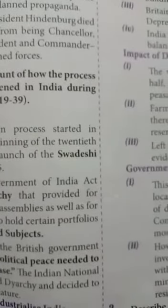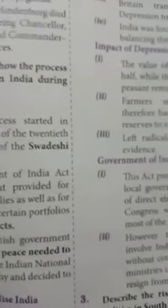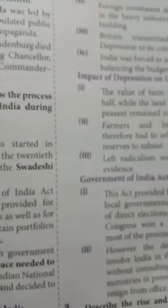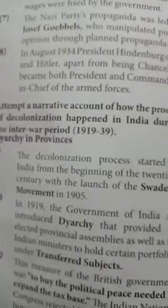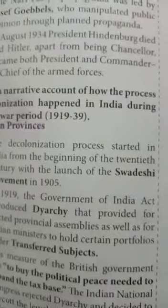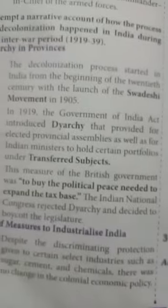This answer has totally three to five points. It is true that the process of decolonization happened in India during the interwar period 1919 to 1939. Students must study thoroughly and write neatly.